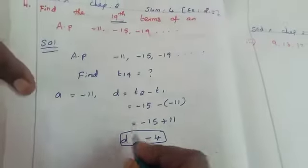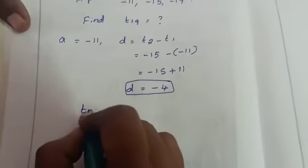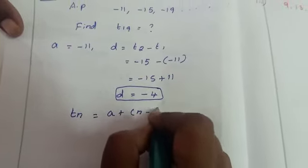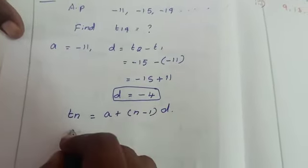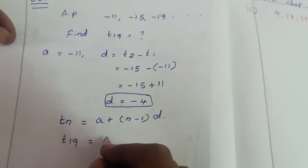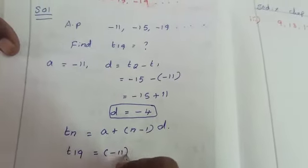We want to find T19. So take and write the formula Tn: a plus n minus 1 into d. We want to find T19 equal to a. A is -11 plus.